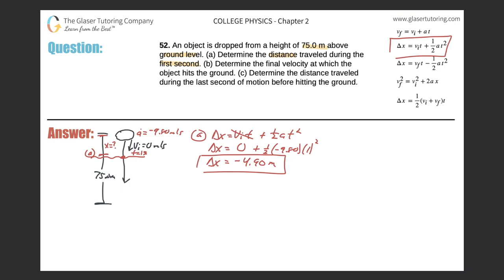Now it says determine the final velocity at which the object hits the ground. The frame is slightly different — the starting point is at the top, and the ending value is down at the bottom. My initial velocity is still zero meters per second, and I'm trying to find the final velocity. I also know the acceleration — negative 9.80 meters per second squared — and the total height is 75 meters. Just be careful: when you plug this number into your calculations, it must be negative, because it starts high and ends low — it's traveling in the negative y direction.